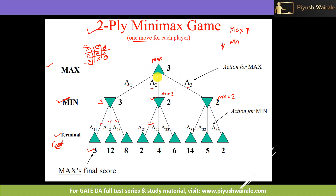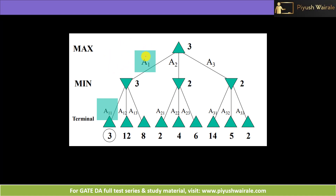Max player now knows: if it plays a1 the value is 3, if it plays a2 the value is 2, and if it plays a3 the value is 2. Out of {3, 2, 2}, the maximum is 3, so Max will take action a1. Then Min will minimize by selecting a11. The final score for Max is 3. This type of question can appear in your exam.